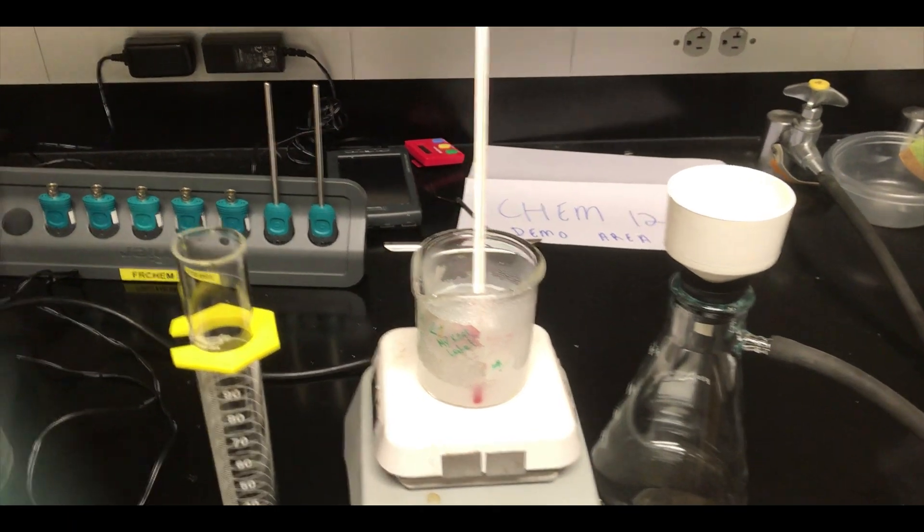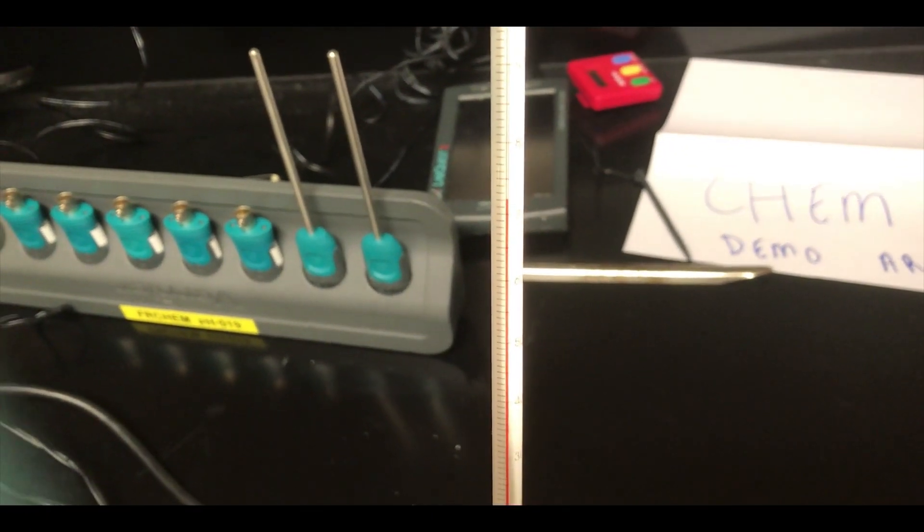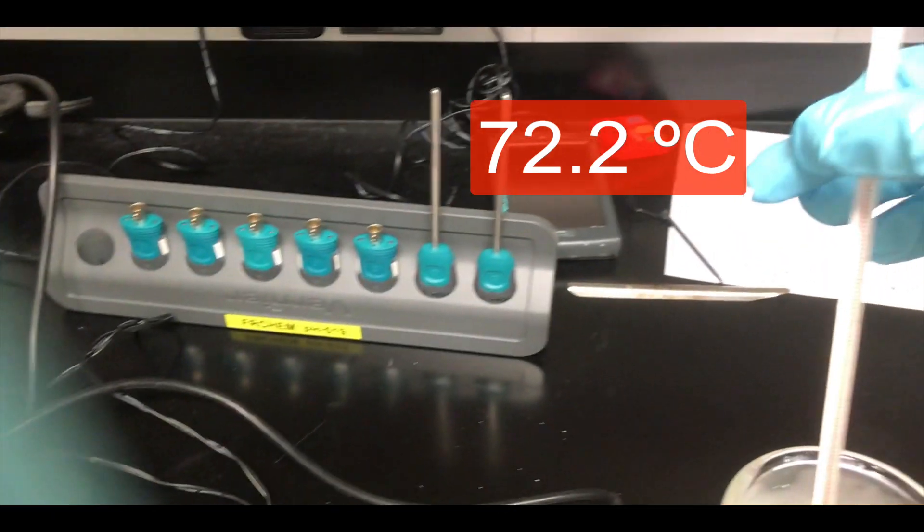So we're starting here with a saturated solution of magnesium hydroxide, Mg(OH)2, at high temperature. This is at about 72.2 degrees Celsius.